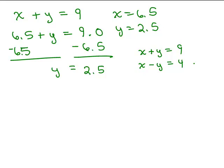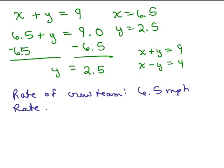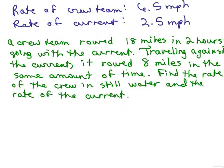But now we need to go back to the original words and see if this all makes sense. What we're saying, remember, is that the rate of the crew team is 6.5 miles per hour and the rate of the current is 2.5 miles per hour. And now we're going to check that against the original problem in words.